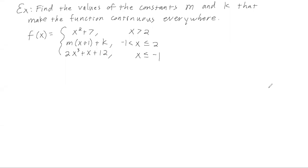Let's pick back up from section 1.5 and look at this problem: find the values of the constants m and k to make the function continuous everywhere. If we look at the first piece, it's just a polynomial, so it's continuous everywhere if we don't consider these restrictions.